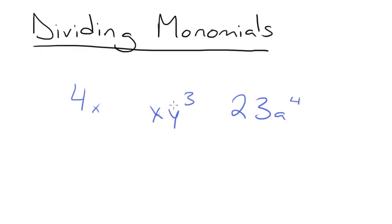Right here especially, it doesn't quite look like this might be a monomial, but it is, because these two terms are multiplied together, just like 4 and x are multiplied together. So all three of these are examples of monomials.